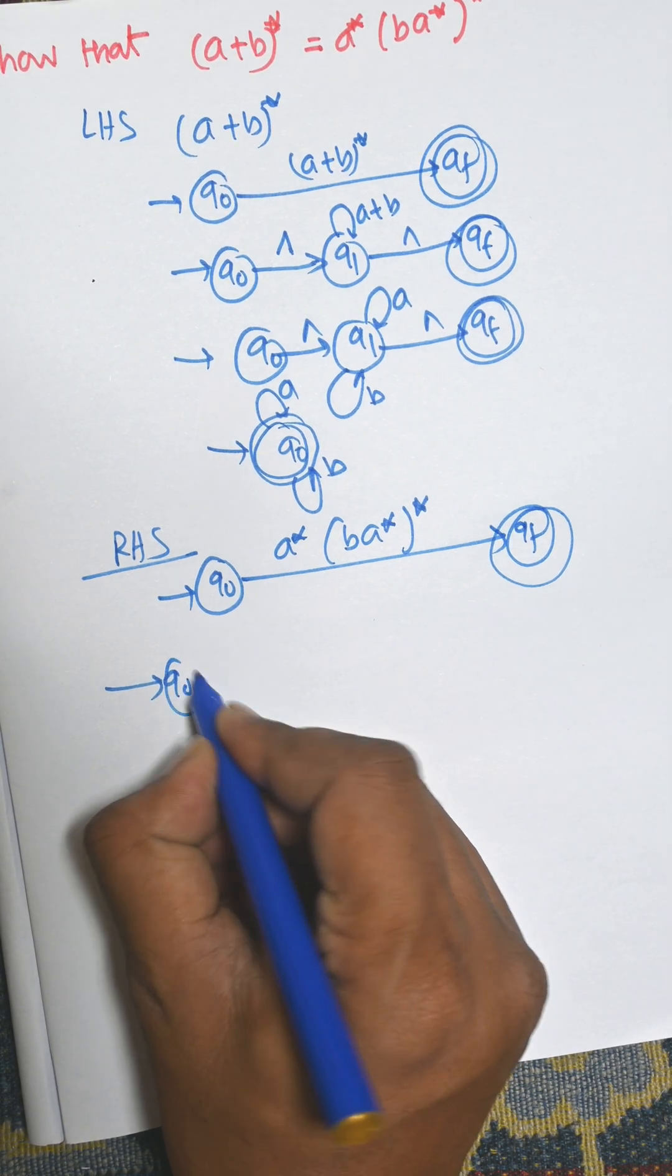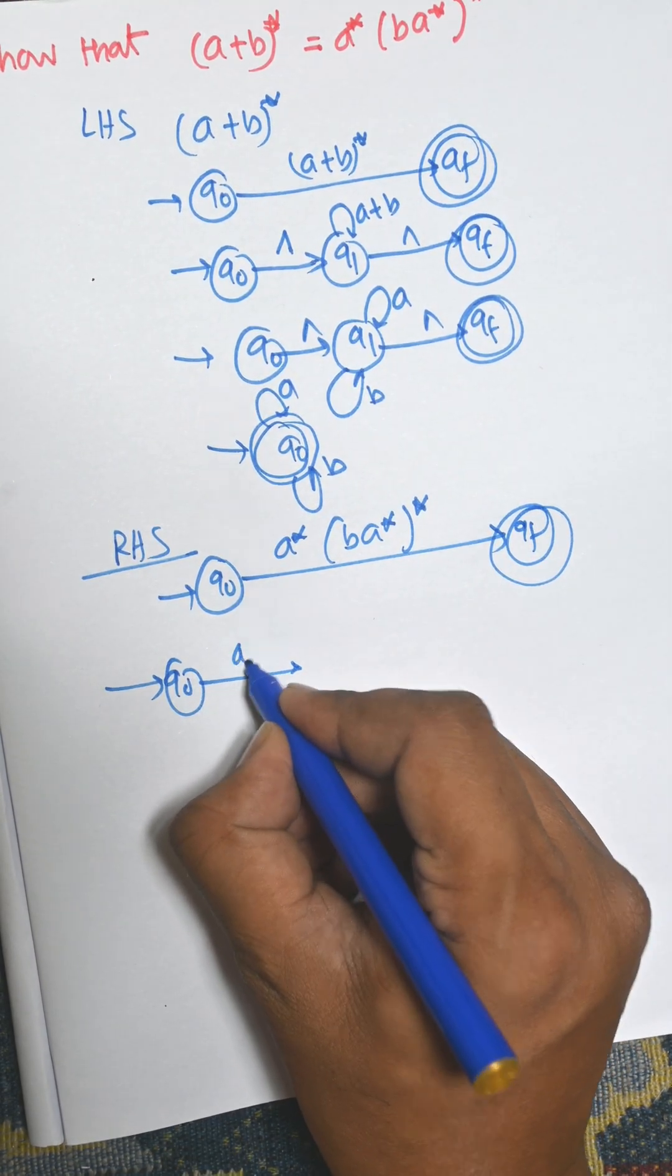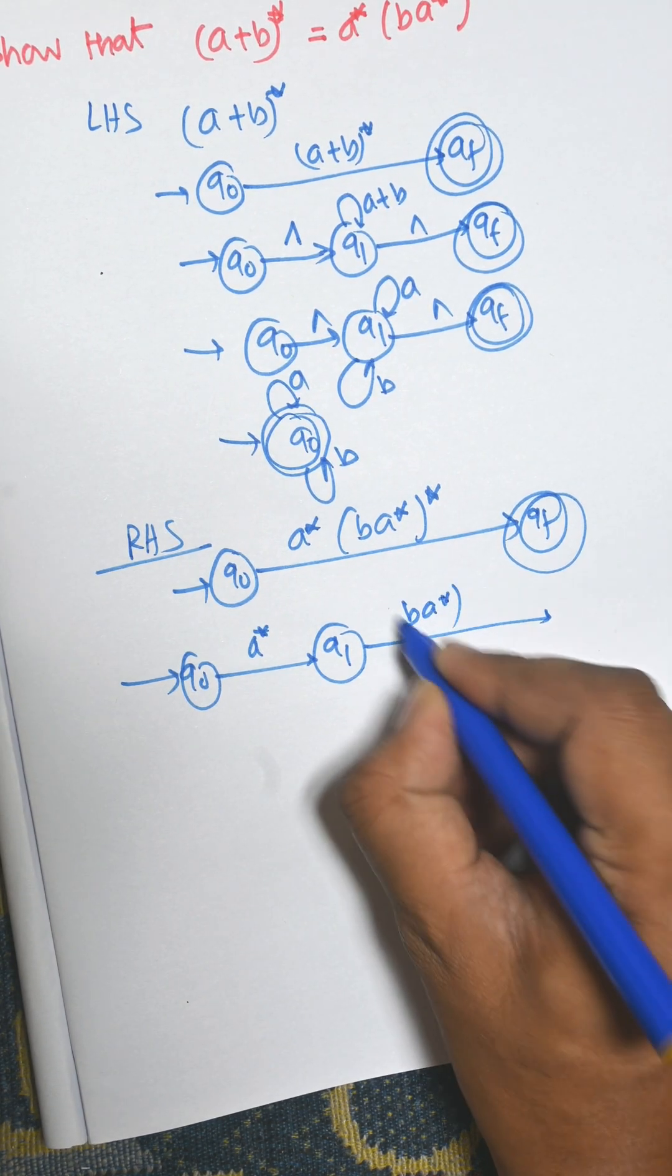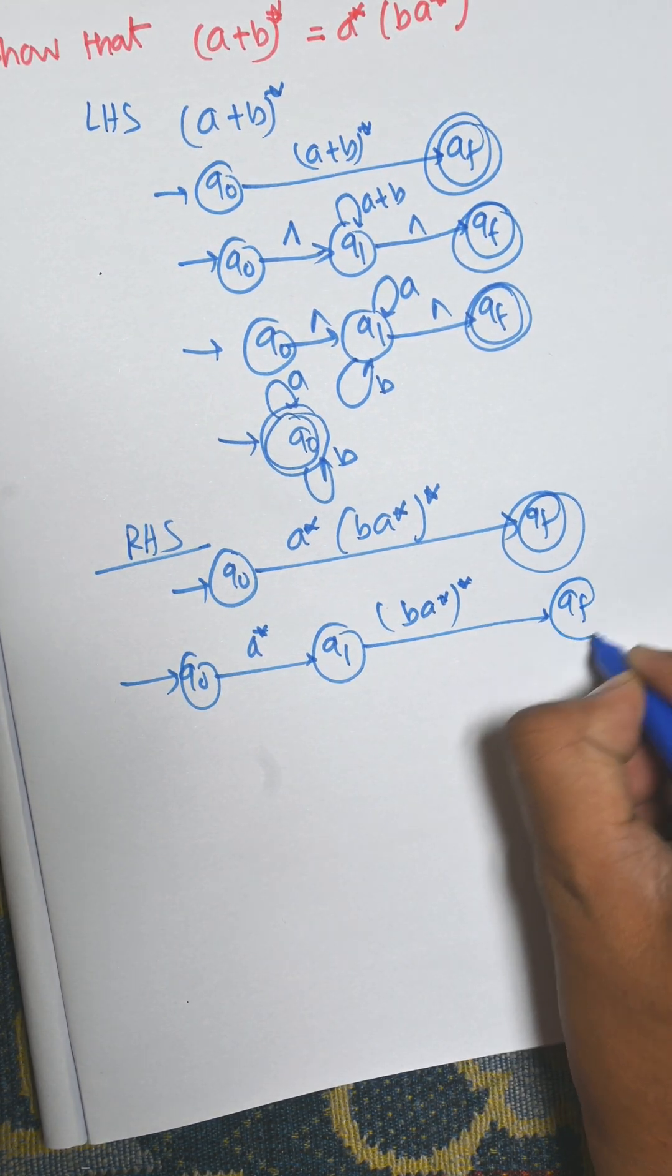Now for q0 to a*, there is another input and it goes to q1. From q1 to ba* and whole star we will get qf.